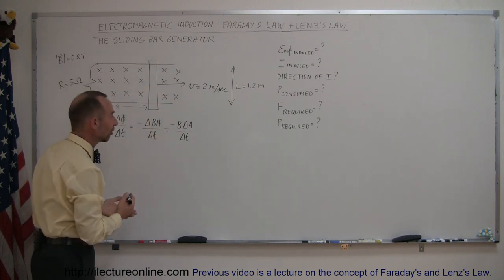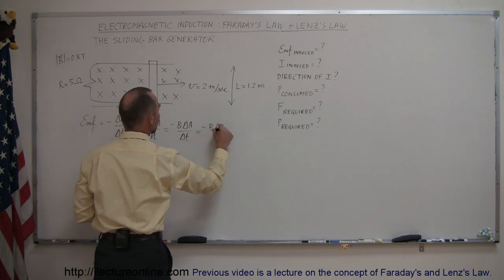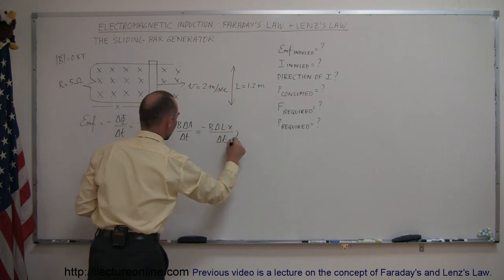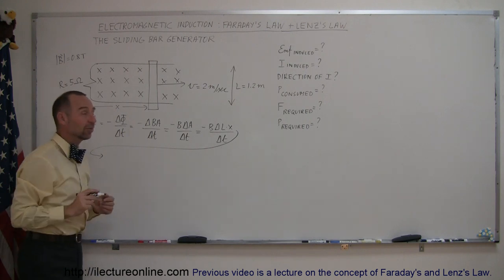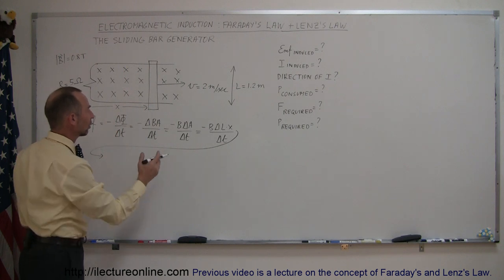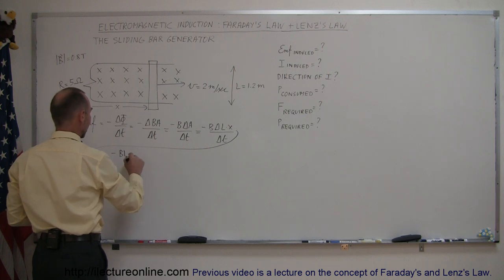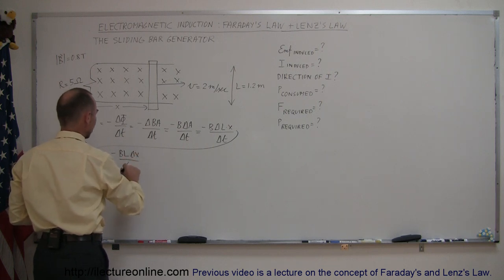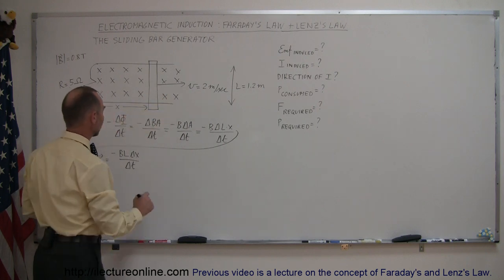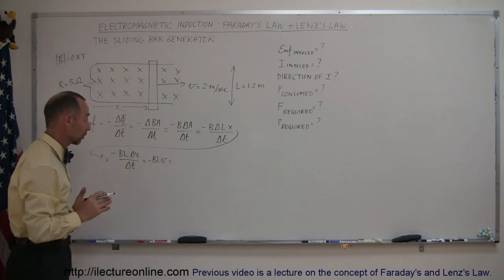So EMF equals minus B times the change in L times X over time. Since L is a fixed value — the distance between the rails doesn't change — L can come outside, giving us minus B times L times the change in X over time. The change in X over time is the same as the velocity, so this can be written as minus BLV.